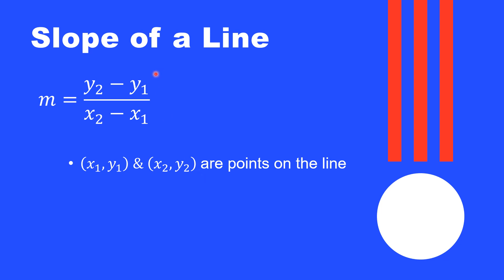Make sure that your Y values go in the top and the X values go in the bottom. Every once in a while someone will accidentally flip this around and put the X's in the top and the Y's in the bottom, so make sure you get that written down correctly. If you're not following along with the guided notes, make sure you write this formula down — this should also go on your formula sheet, as we'll use it throughout this lesson.